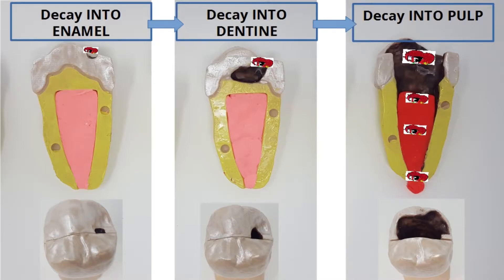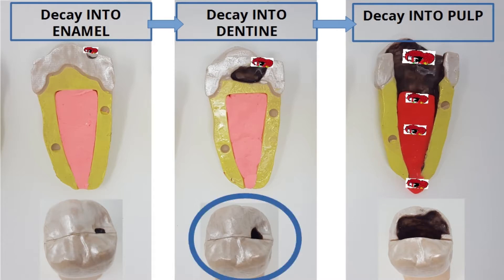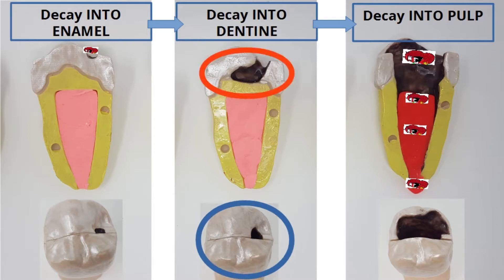This slide shows 3D printed teeth with different stages of tooth decay. Look at the tooth with decay in dentine from the top view. This shows a small hole, but inside the tooth shows a huge amount of tooth decay.